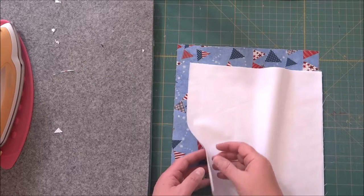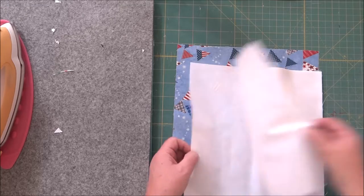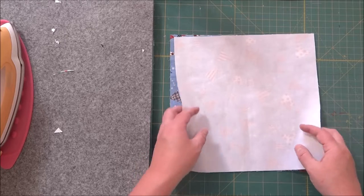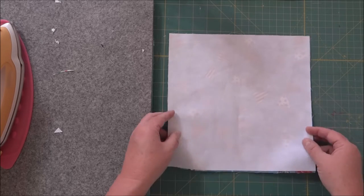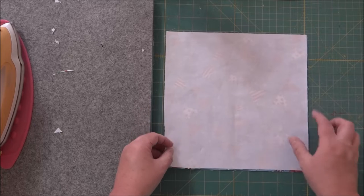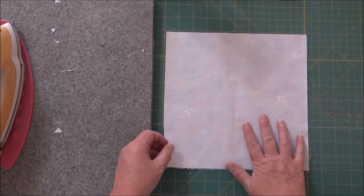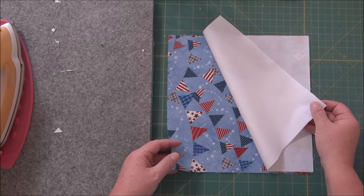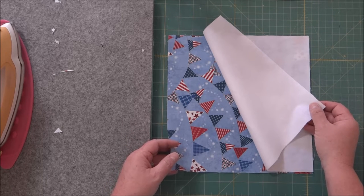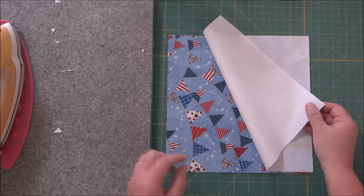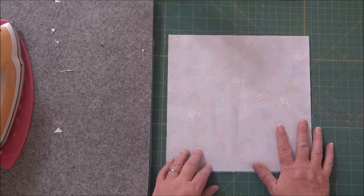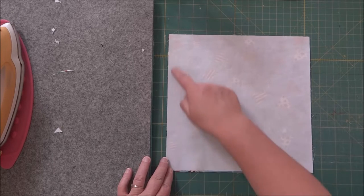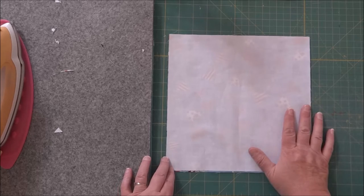The first thing you're going to do is take two pieces of fabric and they need to be the same size. This process can be done with any size. I'm starting off with a 10 inch by 10 inch square which is the exact same size as a layer cake. So this pattern would be super simple to make using your layer cake pieces. The first thing we're going to do is take this to the sewing machine and stitch around all the way on all four sides of this block.